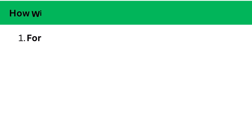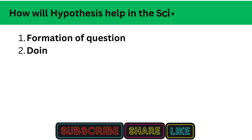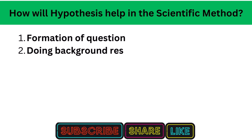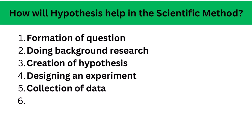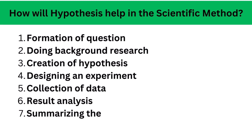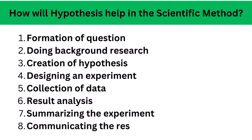How will hypothesis help in the scientific method? Researchers use hypotheses to put down their thoughts directing how the experiment would take place. The following are the steps involved in the scientific method: formation of question, doing background research, creation of hypothesis, designing an experiment, collection of data, result analysis, summarizing the experiment, and communicating the results.